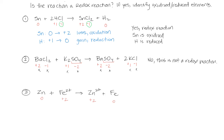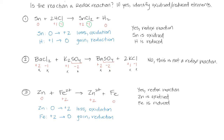Let's look at the change in oxidation states from reactants to products. Zinc on the left is zero, and on the right becomes plus two — that's loss of electrons, so that's oxidation. Iron on the left is plus two, and on the right side is zero, so we've gained electrons, which is reduction. Yes, this is a redox reaction because there is a transfer of electrons: zinc is oxidized, and iron is reduced.